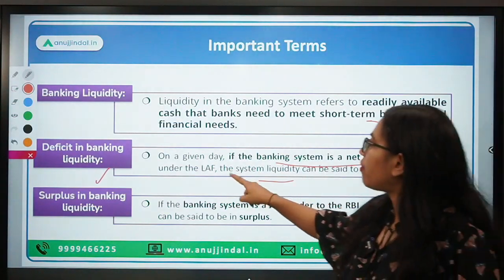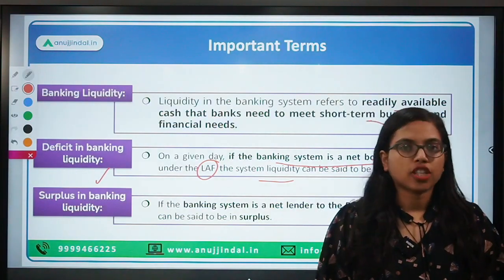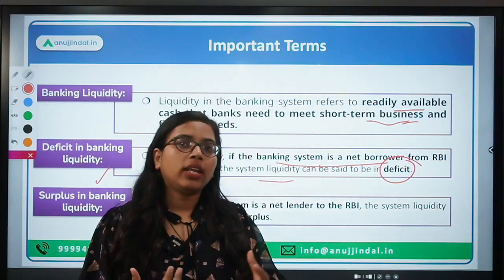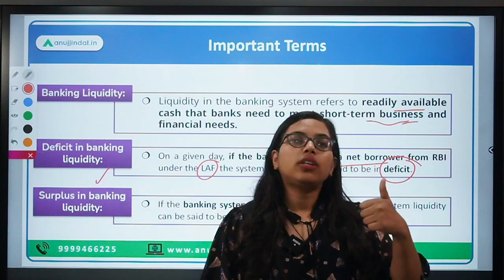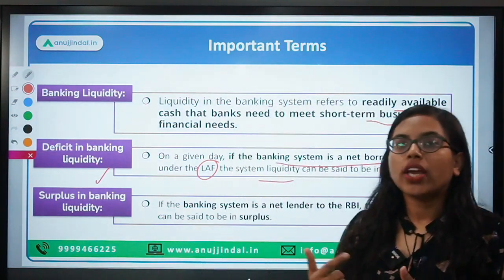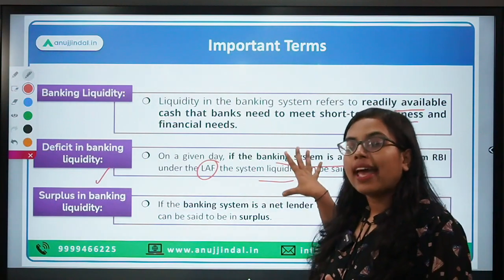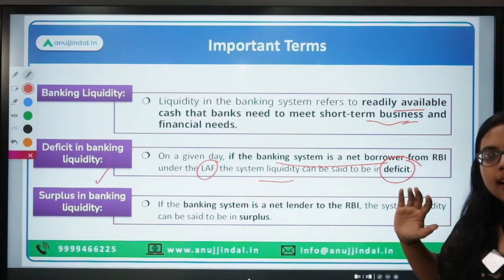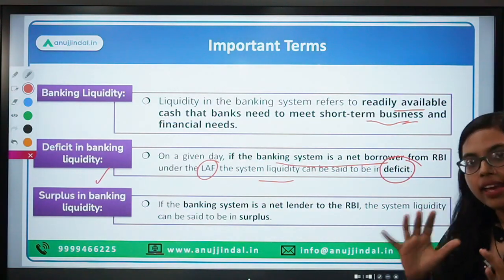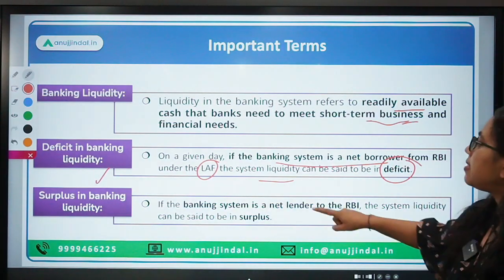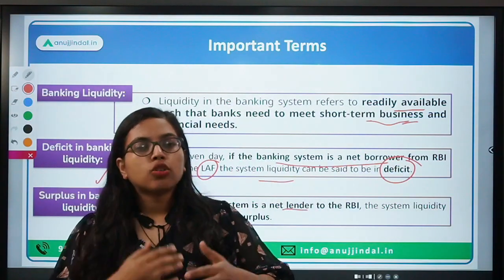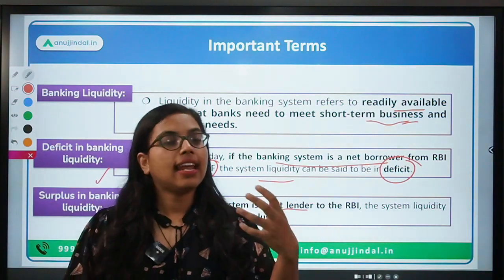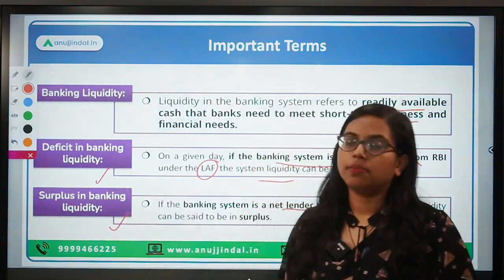What is LAF? LAF stands for Liquidity Adjustment Facility. It is basically an overnight platform whereby banks transact between each other and try to borrow or lend money to each other in order to meet their short-term financial and business needs. The opposite is surplus in banking liquidity: if on any given day the entire banking system is a net lender — they have the money — then at that time they are said to be in surplus.